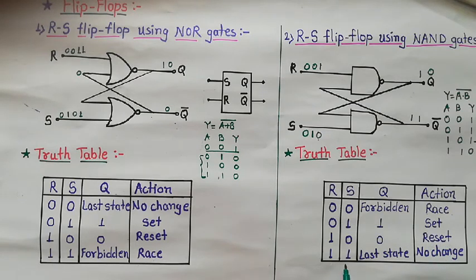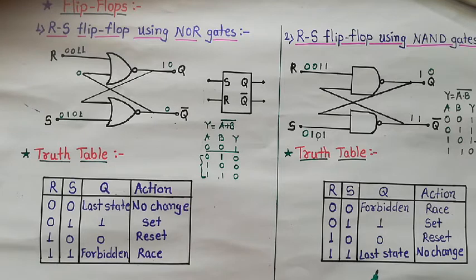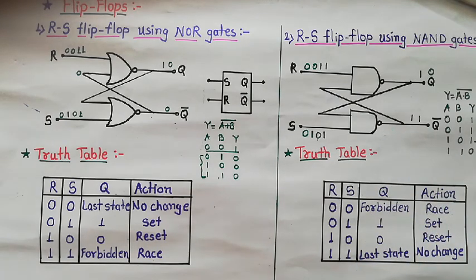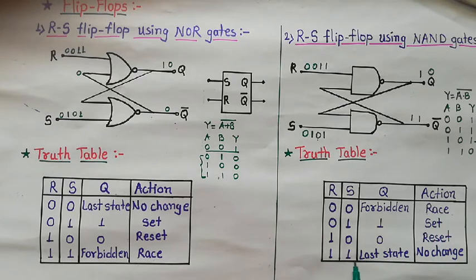When R=1 and S=1, this gives the no change condition in NAND-based RS flip-flop. Comparing both constructions: the flip-flop is the same — RS flip-flop — but the construction is different. In NOR-based RS flip-flop, R=0, S=0 gives no change and R=1, S=1 gives the race/forbidden condition. In NAND-based RS flip-flop, R=0, S=0 gives the race condition and R=1, S=1 gives no change.